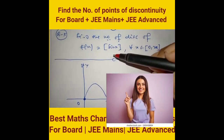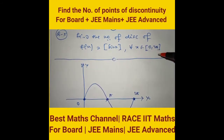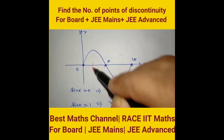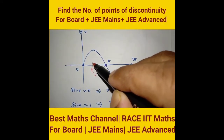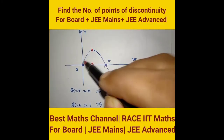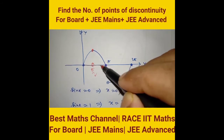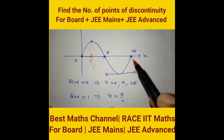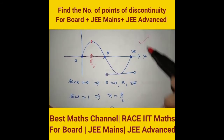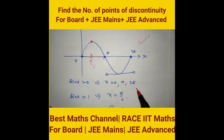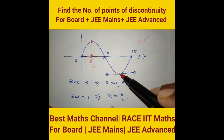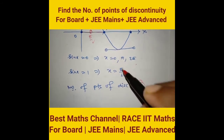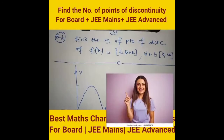Find the number of points of discontinuity of f(x) = [sin x] for x ∈ [0, 2π]. Looking at the graph of sin x: when sin x takes integer values (−1, 0, 1) the greatest integer function is discontinuous. Since sin x is continuous and transitions through integers, the number of points of discontinuity is 4, at x = 0, π, 2π, and π/2.